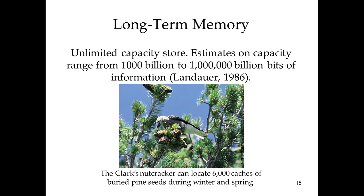The information we store in long-term memory is largely dependent on whether or not it's important to us. Birds tend to store information about the location of food, travel patterns, and songs — those are primary components of their memories. They certainly have memories of predators too. But other things, like whether or not a human is friendly, are less important and less likely to be retained long-term.